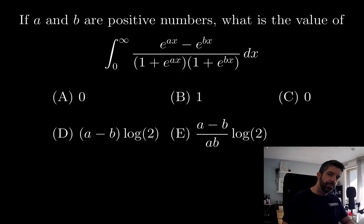If a and b are positive numbers, what is the value of the integral from zero to infinity of this big messy thing? And we're given five possible options for what the value of this integral is.